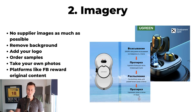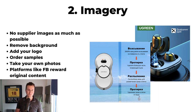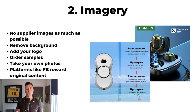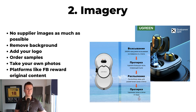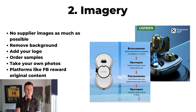Number two is imagery. If any of your images look low quality or generic, you need a massive rethink. Do not use supplier images as much as possible — sometimes it's unavoidable, but try to avoid them. If you have no choice, remove the background and add your logo as a watermark. Better yet, order some samples and take your own photos. Even on an iPhone with the right lighting you can take incredible high-detail photos, and there are unlimited tutorials on YouTube on how to do this. Having custom original photos has two main benefits: platforms like Facebook reward original content, and if you're using the same supplier images as everyone else, Facebook will see your site as similar to one a customer previously visited without purchasing and won't want to send users there.